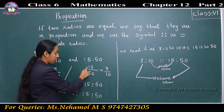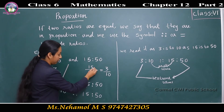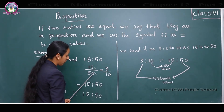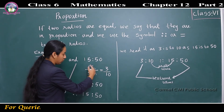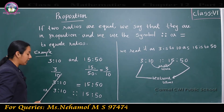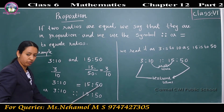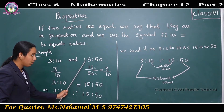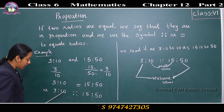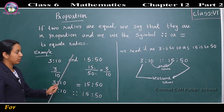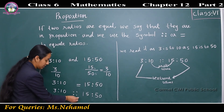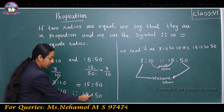15 is to 50 means 15 by 50. If we divide both numerator and denominator by 5, we get 15 by 5 equals 3 and 50 by 5 equals 10, so this is equal to 3 by 10. Since both reduce to 3 by 10, we can say 3 is to 10 equals 15 is to 50, written as 3 is to 10 as 15 is to 50.